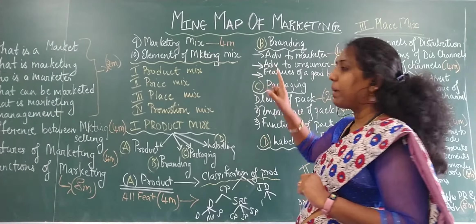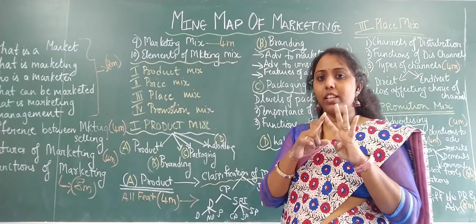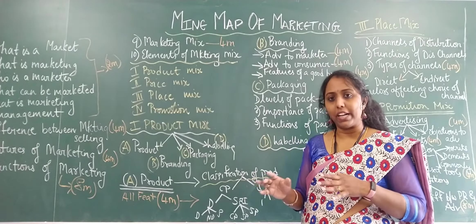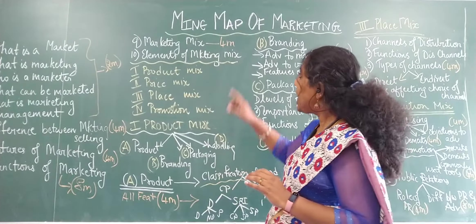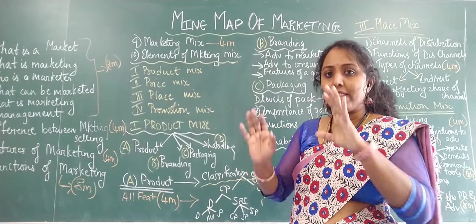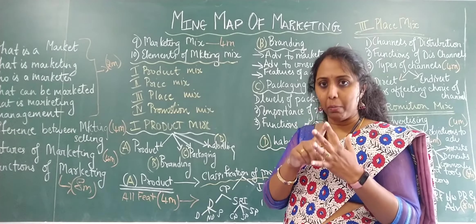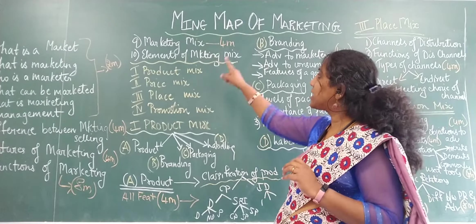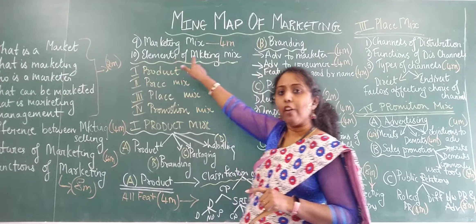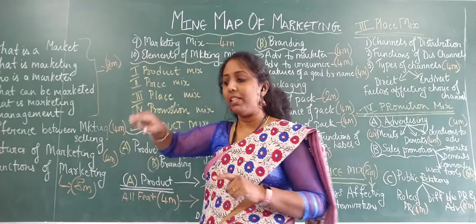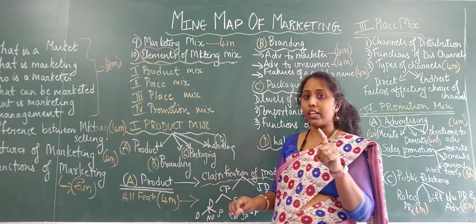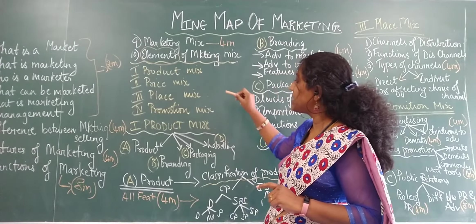The next thing is marketing mix. Marketing mix goes to the four P's of marketing: Product, Price, Place, and Promotion. When they ask you to explain the marketing mix, it usually comes as a four marker — you just need to write the meaning of product, price, place, and promotion. But if they ask you to explain the elements of marketing mix, the word 'elements' refers to product mix, price mix, place mix, and promotion mix.